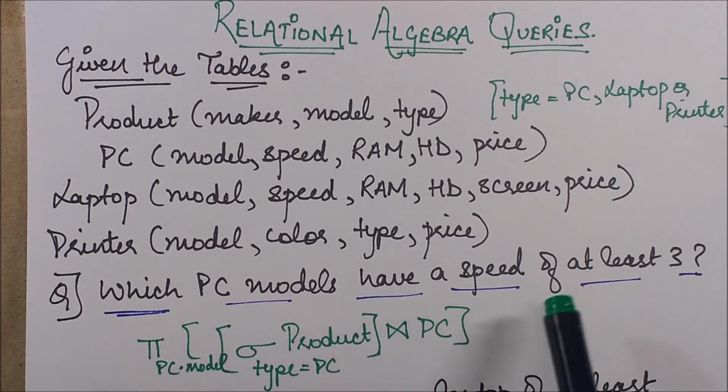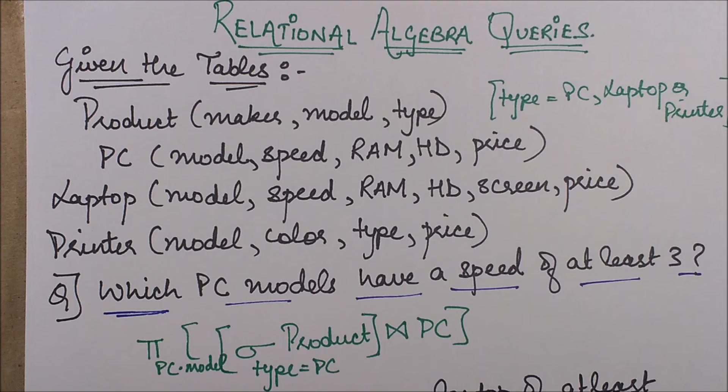The first one is: which PC models have a speed of at least three? Now, so how do we construct this? For this, what do we do?